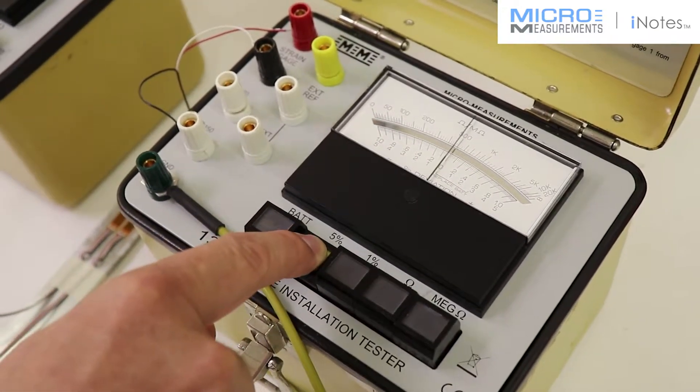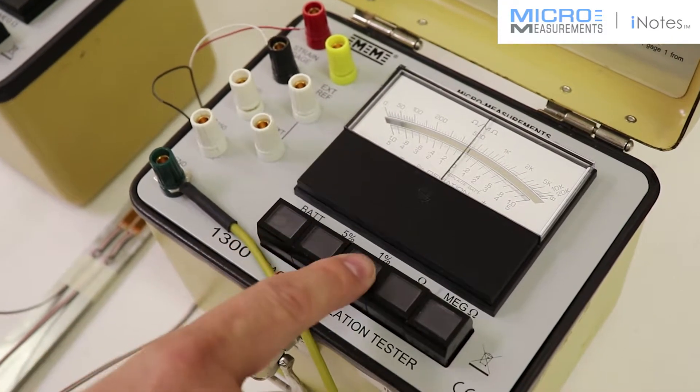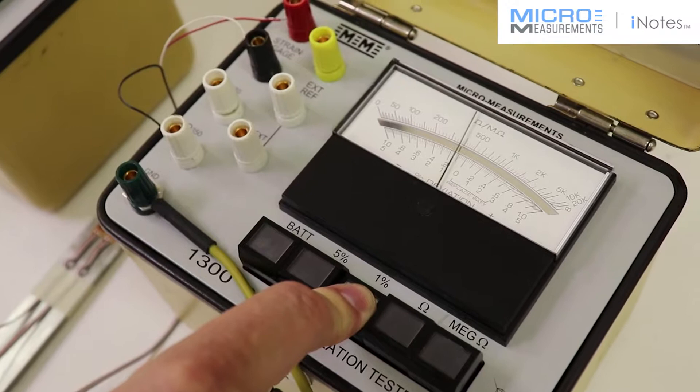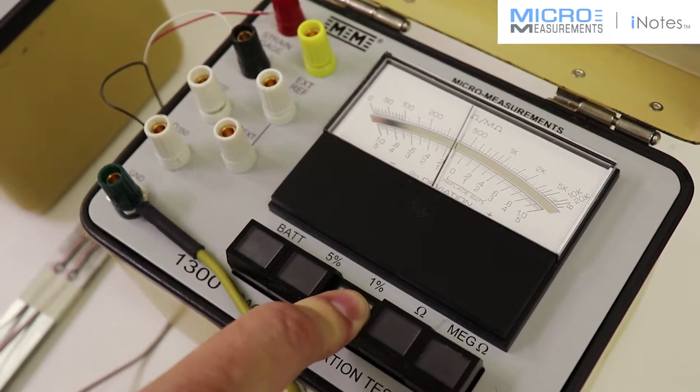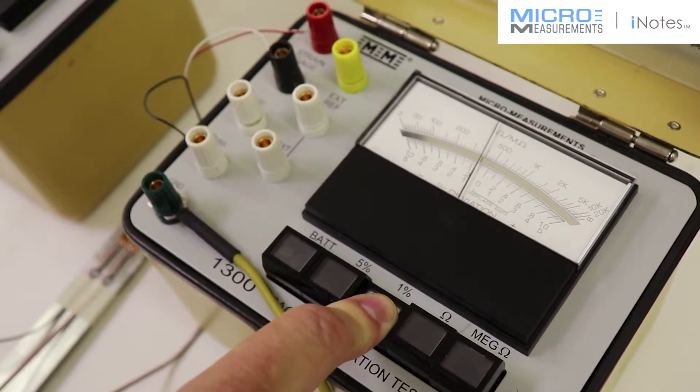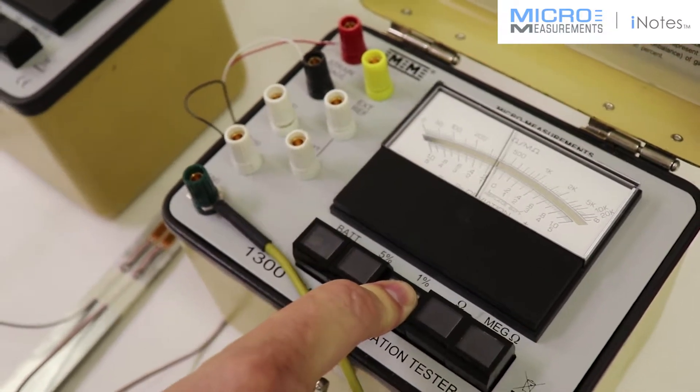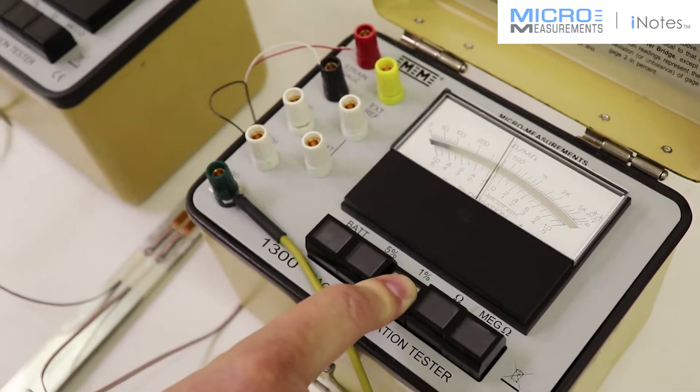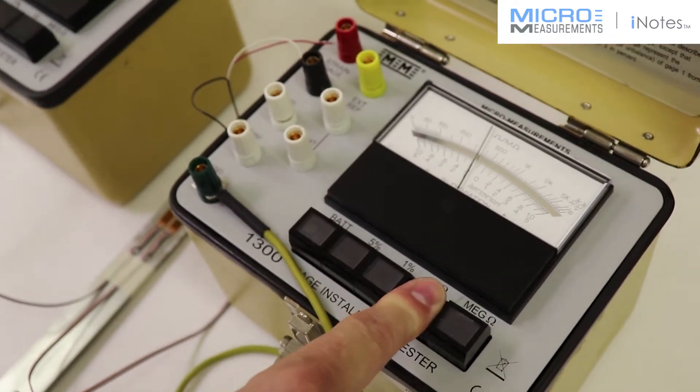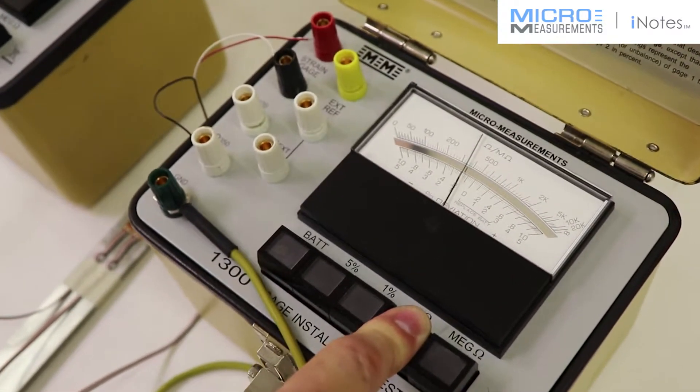At 5% range, the needle really doesn't move. To get a little bit more of an indication, we push the 1% range and we're on the order of about 0.12% on the low side. Again, well inside of the tolerance. We check the resistance of the strain gauge and sure enough, it tells us that it's 350 ohms.